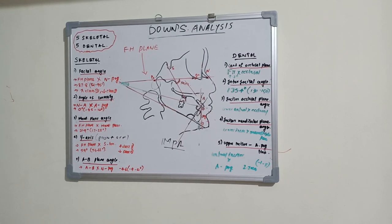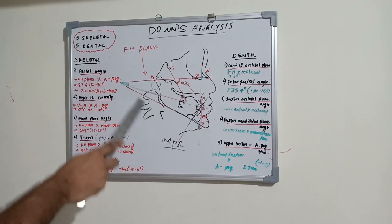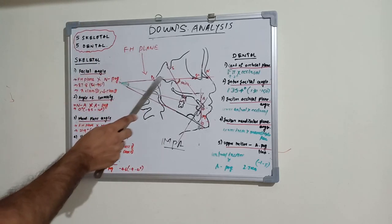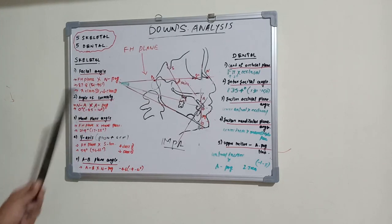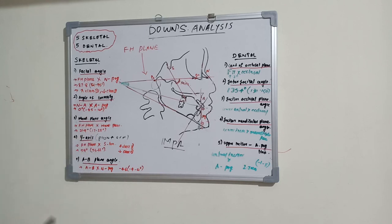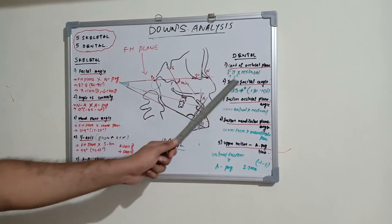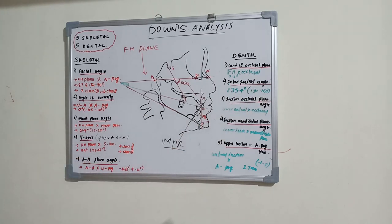Downs analysis has 10 parameters total — 5 skeletal and 5 dental — and is the most commonly used analysis in cephalometrics. The fundamental reference is the FH plane, connecting porion to orbitale. Skeletal parameters: facial angle, angle of convexity, mandibular plane angle, Y-axis, AB plane angle. Dental parameters: cant of occlusal plane, inter-incisal angle, incisor occlusal plane angle, incisor mandibular plane angle, and upper incisor to A-pogonion line — the only linear measurement. Next sessions will cover Steiner's analysis and Tweed's analysis.